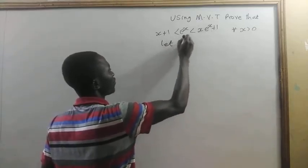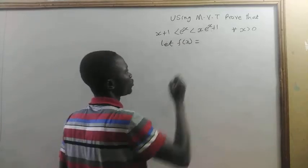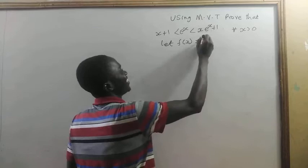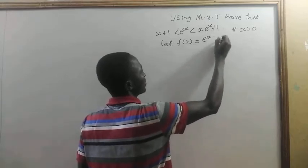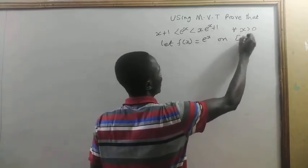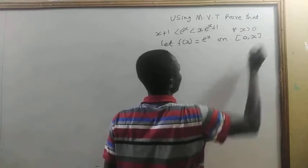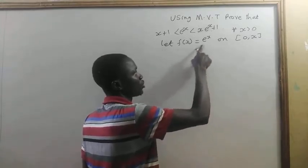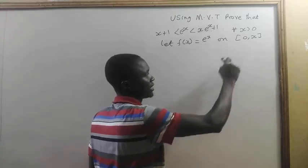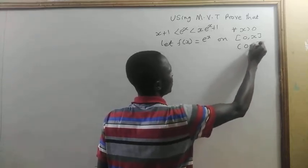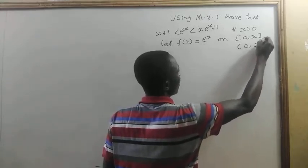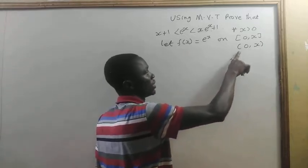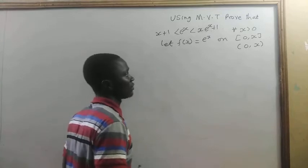If we let f of x equal e to the power x on the closed interval 0 to x, we say that f of x equals e to the power x is continuous on this closed interval and differentiable on the open interval.